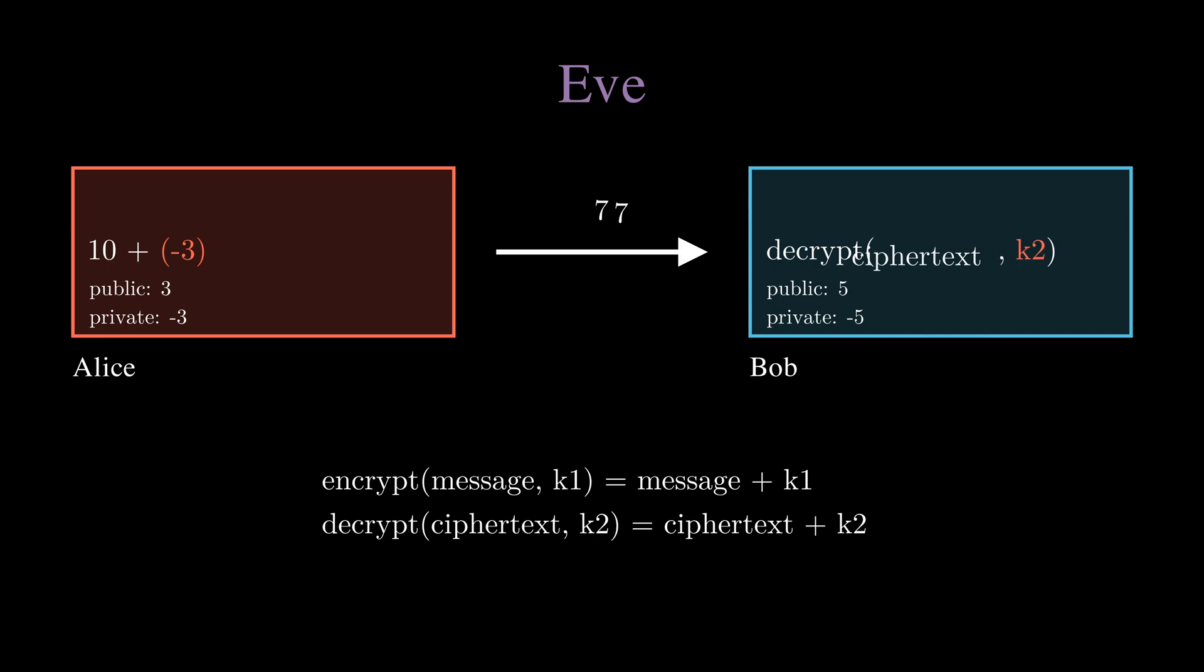This results in 7 as the ciphertext. Now anyone can use her public key 3 in the decrypt message to get back to number 10, meanwhile ensuring it was from Alice. Next video will be looking at a widely used public private key encryption method called RSA.